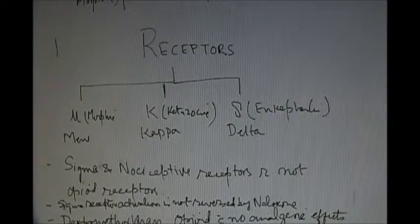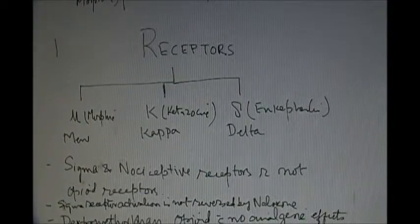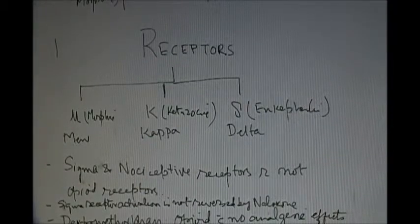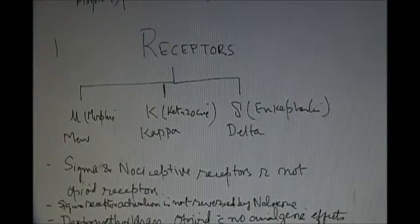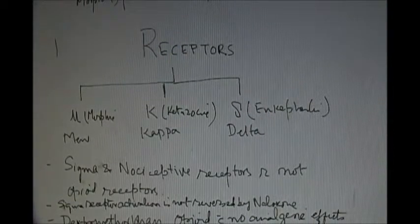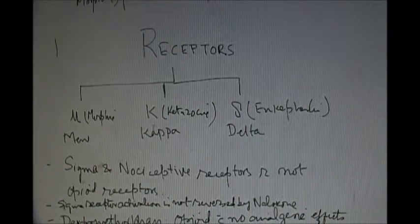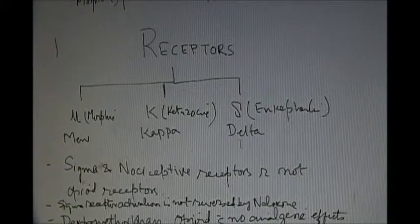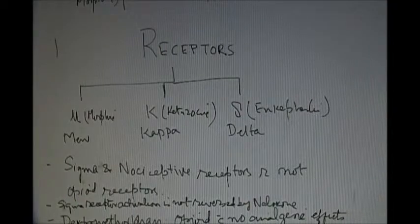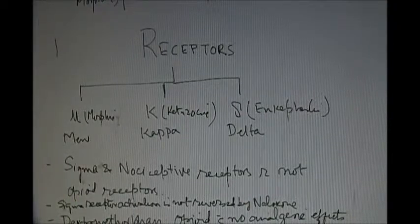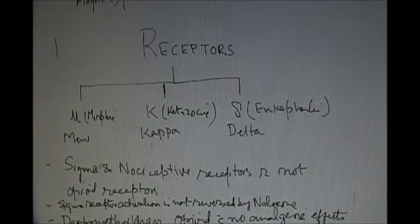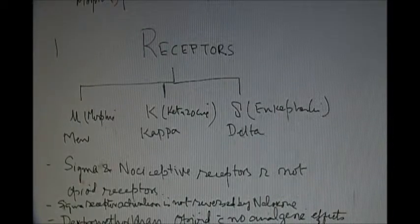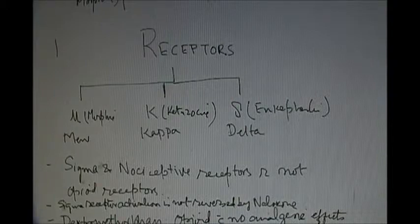The opiate receptors. There are three main types of opiate receptors. The mu receptor, the kappa receptors and the delta receptors. Morphine, for example, acts on mu receptors. Ketazocine acts on kappa receptors. And enkephalins, they act on delta receptors.